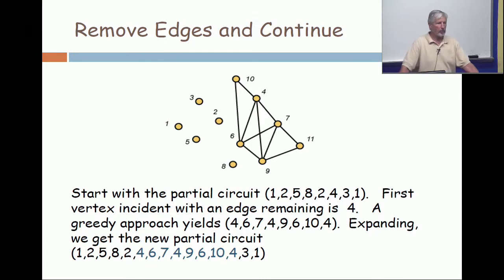So, now, I go to vertex four and I get a greedy approach. Four, cheapest one is six. From six, go to seven. From seven, you go back to four. And that's fine. Then, go to nine, then to six, then to ten, and back to four. But now, you're stuck.